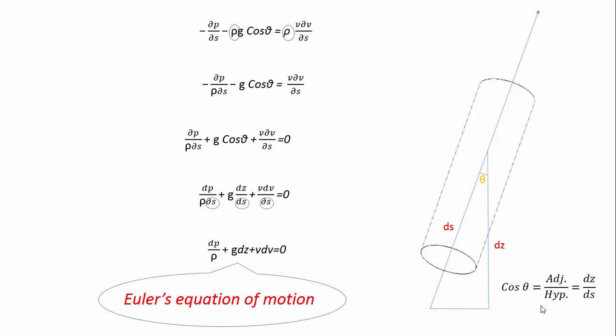Now the relation you get is the Euler's equation of motion for incompressible, inviscid, steady flow of fluid.